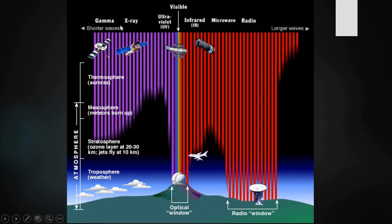The electromagnetic spectrum includes gamma rays, X-rays, ultraviolet rays, visible rays, infrared, microwaves, and radio waves. Gamma rays are absorbed by the stratosphere's ozone layer. X-rays are absorbed by the mesosphere and stratosphere. Ultraviolet rays are partially absorbed by the mesosphere and thermosphere, with only a little reaching the surface. Visible rays fully reach Earth's surface — this is what we call sunlight. Infrared waves, microwaves, and radio waves can also reach Earth's surface.